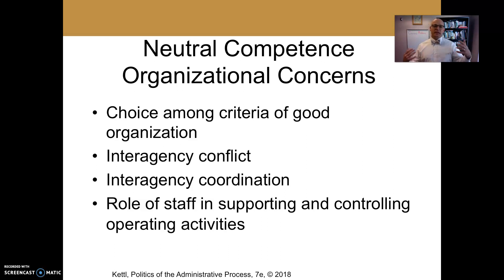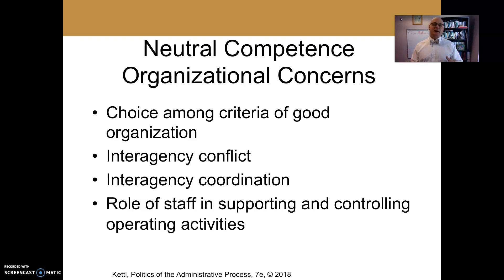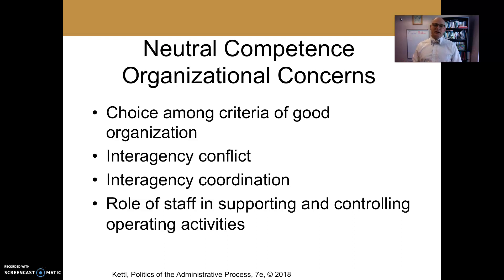As we think about how to reorganize, we have to consider what the key things are that we want to fix. We're going to talk about key criteria of good organizations. Agencies also have interagency conflict — problems inside agencies and problems between agencies. How do we solve that conflict, increase coordination, and avoid duplicating functions across different organizations to increase efficiency? At the end of the lecture, we'll talk about how staff works to resolve these problems and coordinate agency behavior.